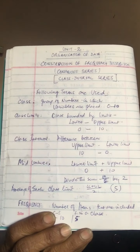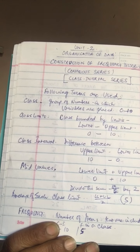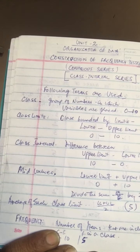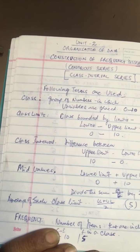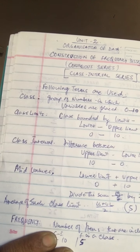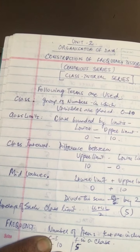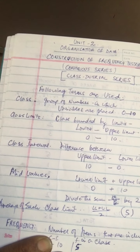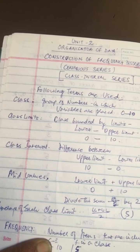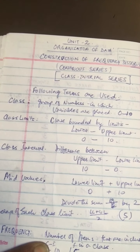Now what is a class? It means a group of numbers in which items are placed, such as 0 to 10, 10 to 20, etc. Now we are going to talk about class limits. Each class is bounded by a class limit. There are two limits of each class. These are the lower limit and the upper limit.